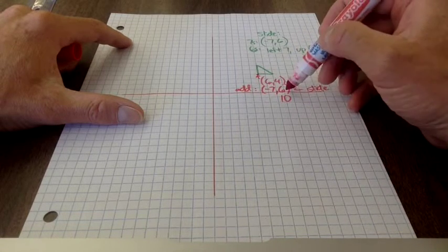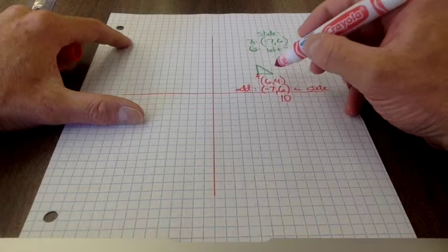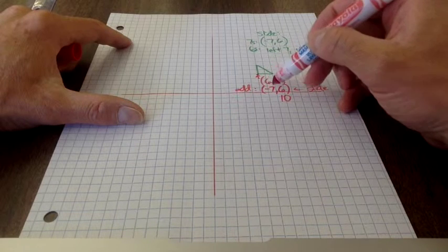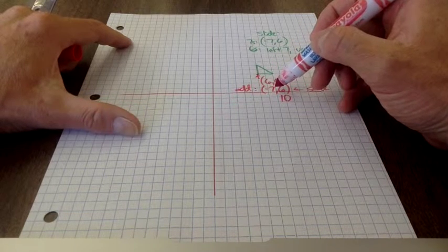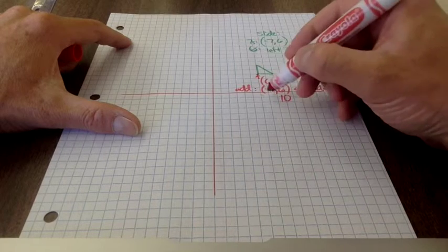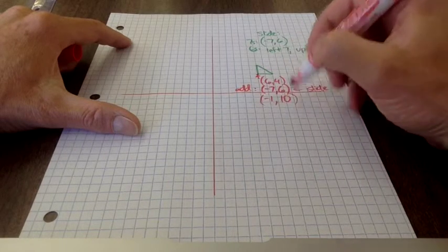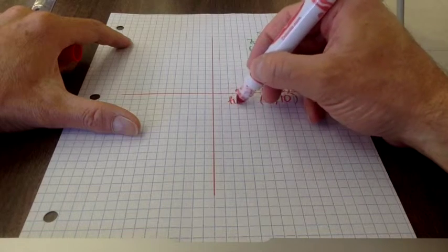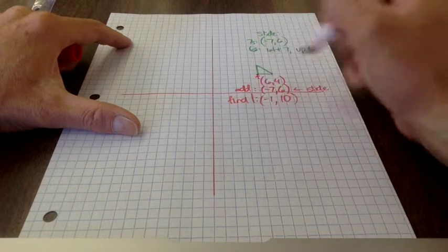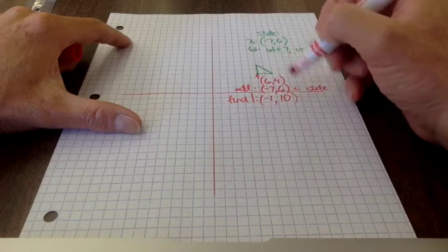So you know that your y coordinate is going to be ten. Your x coordinate, six plus negative seven is negative one. Final is negative one and ten.